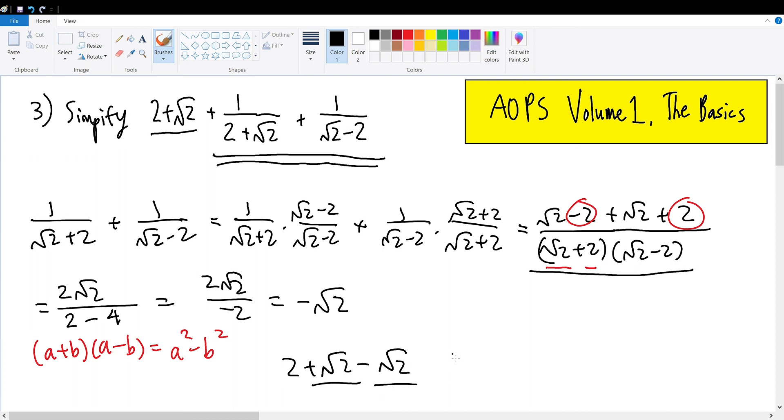We can cancel √2 and -√2 to be equal to 2 + 0, which is equal to 2, the solution to number 3 within this problem.